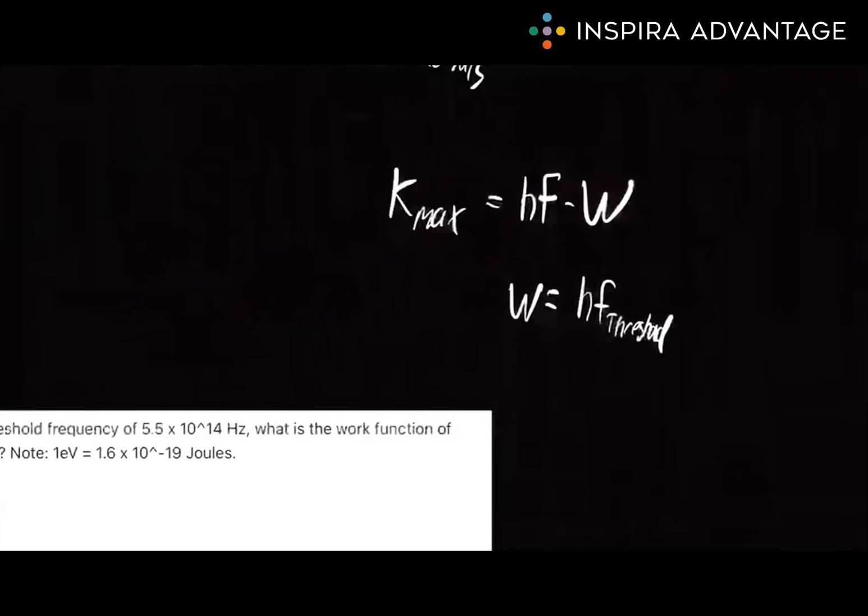It is given by W equals HF threshold, where H again is Planck's constant, very small number, and F threshold is the threshold frequency. This equation is a lot less important than the other two, but nonetheless worth talking about since we're talking about the photoelectric effect.